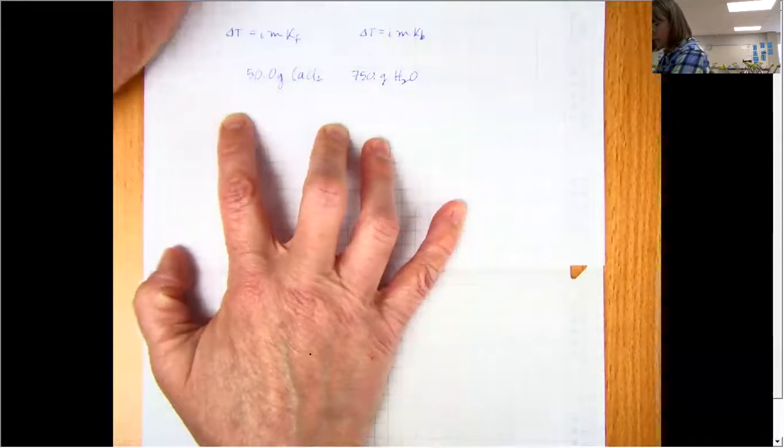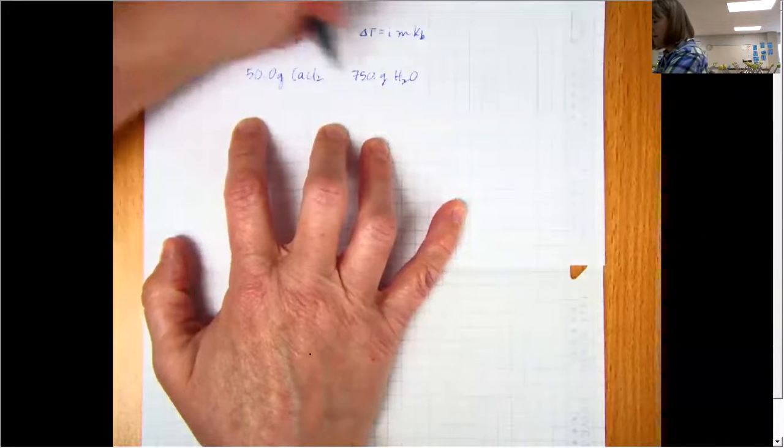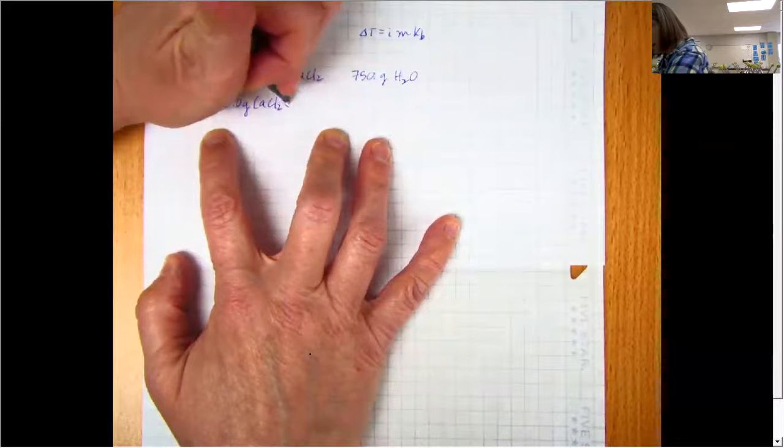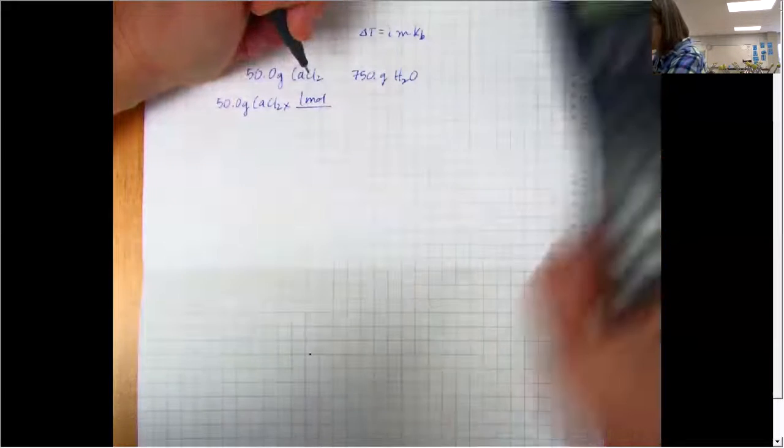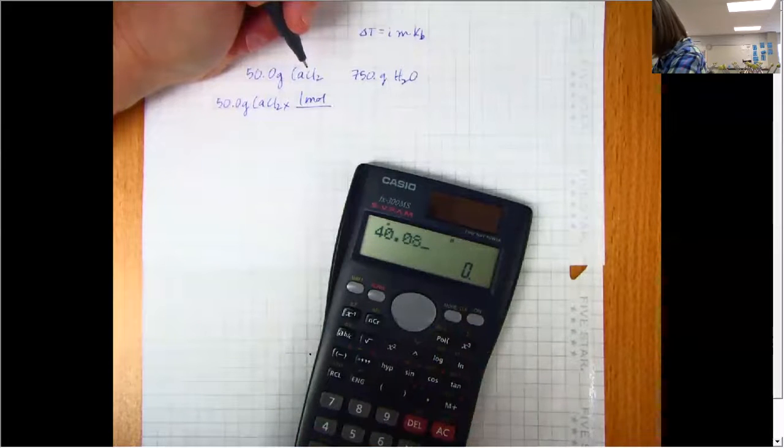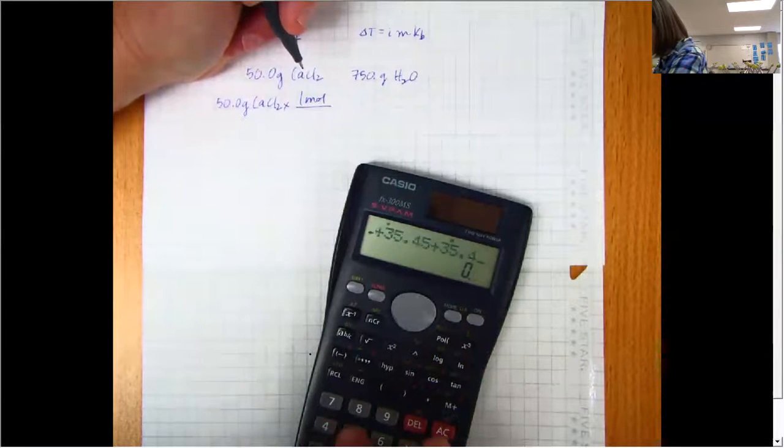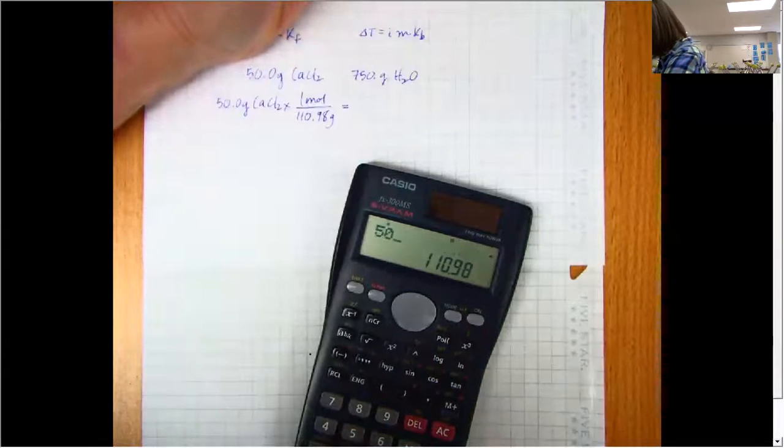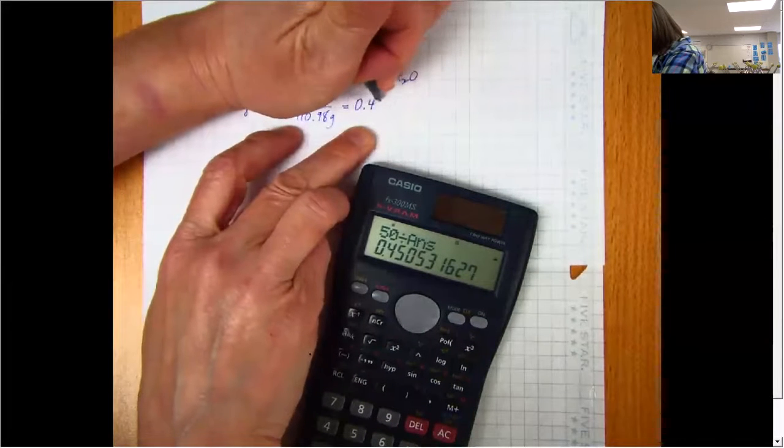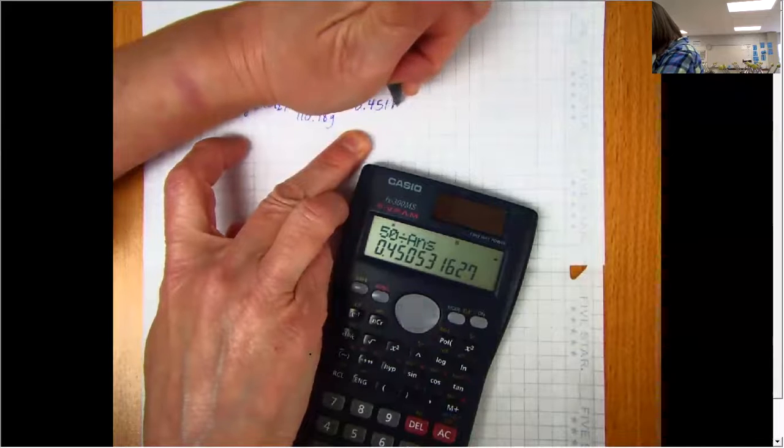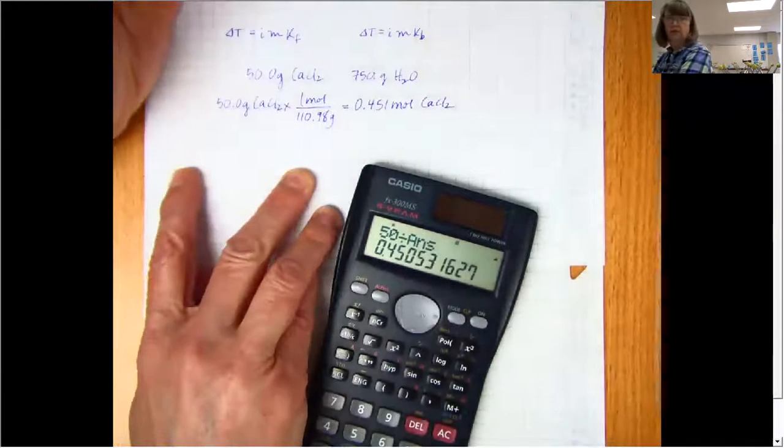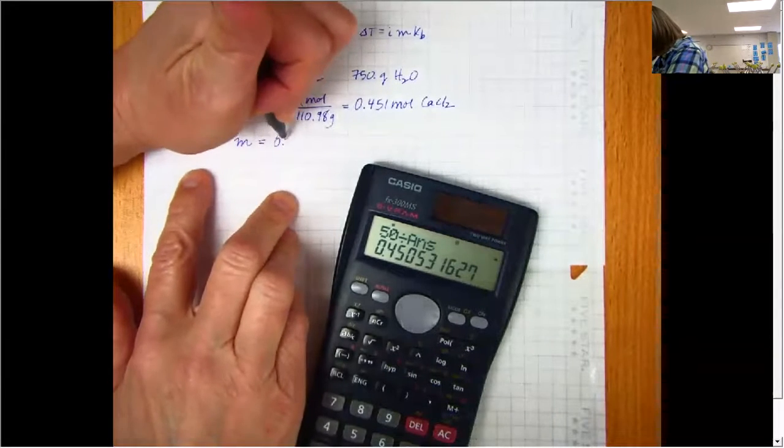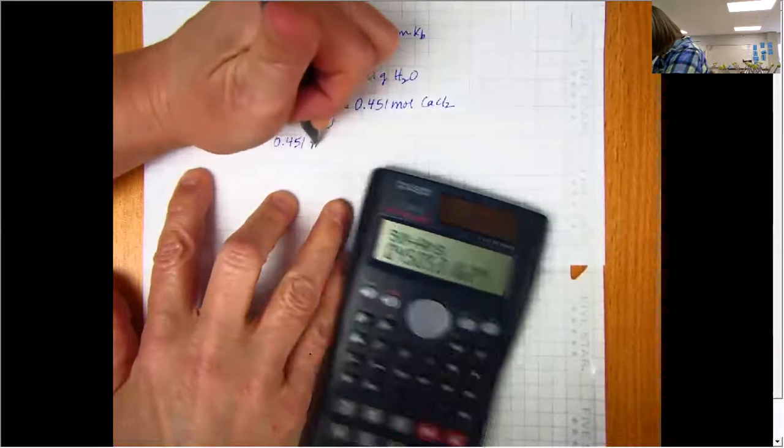So to get the molality, I am going to need to know the moles of calcium chloride divided by the kilograms of water. So here's my 50 grams of calcium chloride, one mole of calcium chloride, let's see, 40.08 plus 35.45 plus 35.45, 110.98. So that gives me 0.451 moles of calcium chloride.